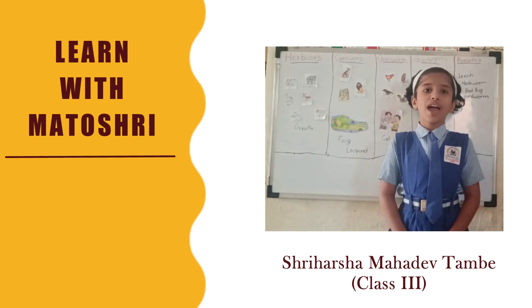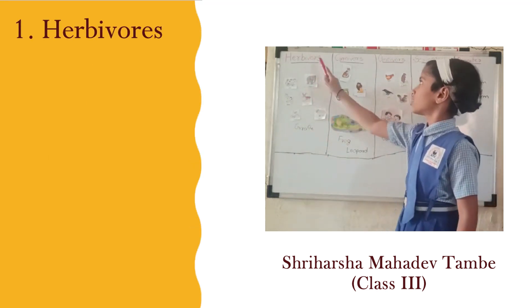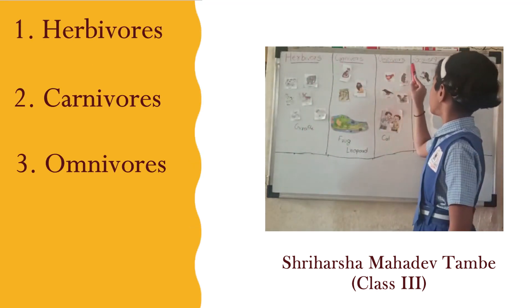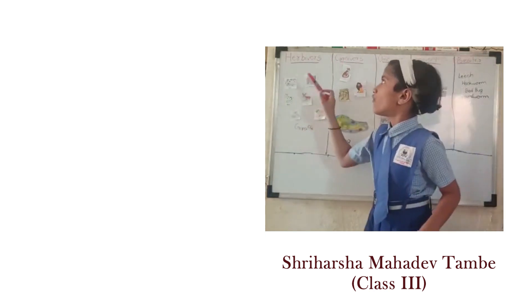There are five main categories. They are Herbivores, Carnivores, Omnivores, Scavengers, and Parasites.